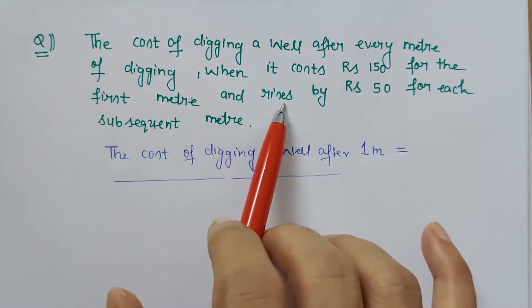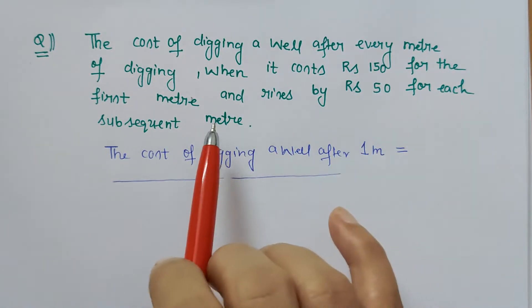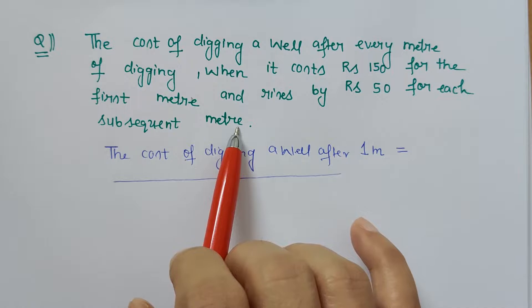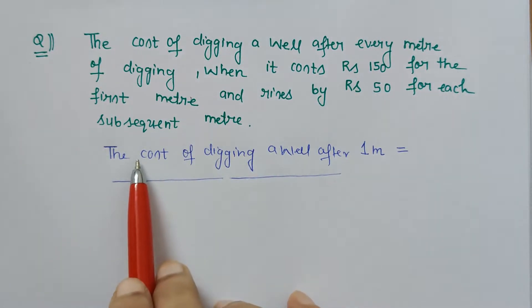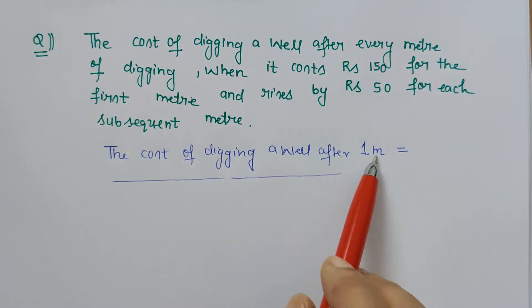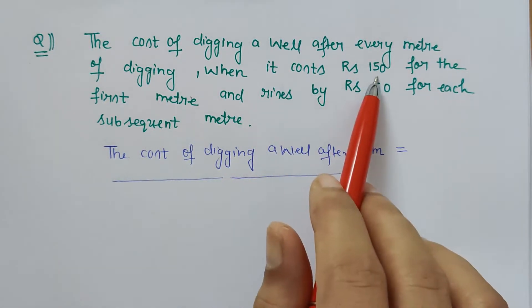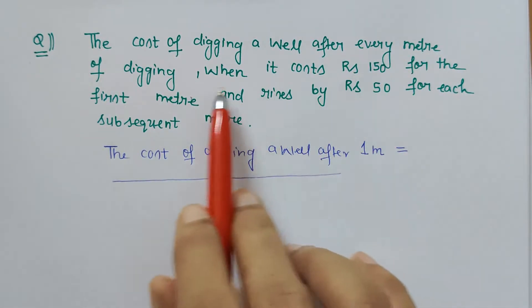And rises by rupees 50 for each subsequent meter. So let's mention that situation given to us. The cost of digging a well after one meter would be rupees 150 because every meter it costs rupees 150, so I am writing 150.